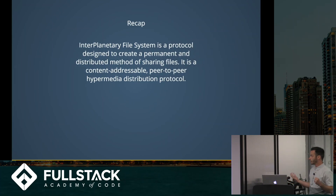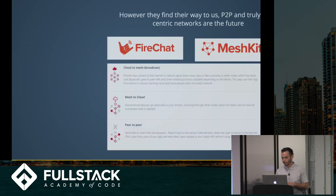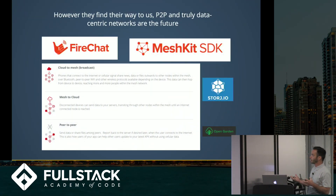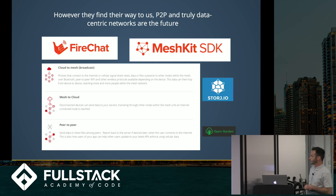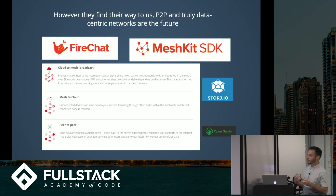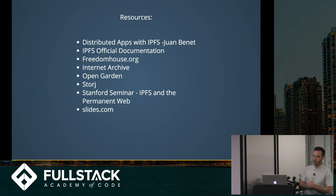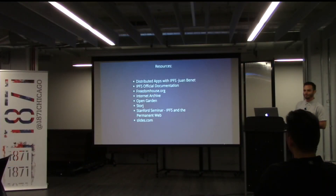To recap: the Interplanetary File System is a protocol designed to create a permanent and distributed method of sharing files. It's content-addressable, peer-to-peer, hypermedia distribution protocol. Peer-to-peer and truly data-centric networks are the future. A couple of examples using it right now: FireChat, built over MeshKit SDK, is a chat app that doesn't require an internet connection. Storage.io and OpenGarden, who owns FireChat, are utilizing similar technologies. It's definitely the future — there are some resources, and that is my presentation. Thank you.